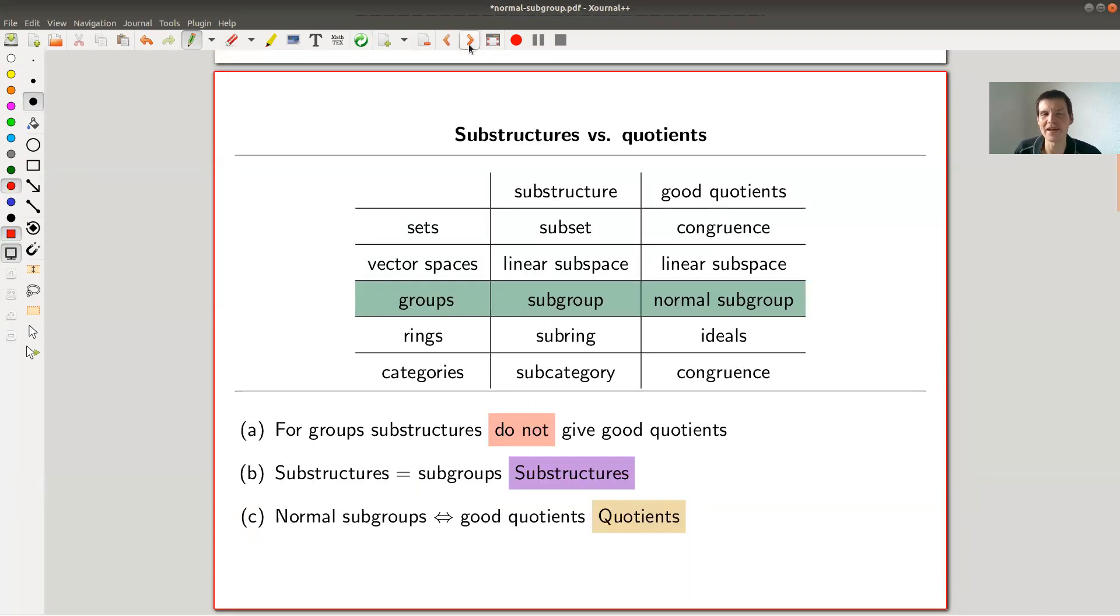So the whole point, and this is kind of a general philosophy that you will see, is substructures might not be the right thing to consider if you want to take quotients. For vector spaces, actually, there is no difference. The definition is exactly built to be the one of a substructure. Turns out that if you want to take quotients, it's also the right structure.